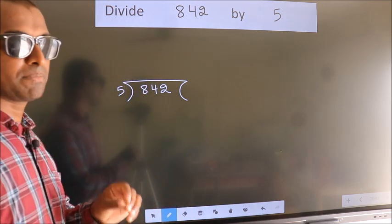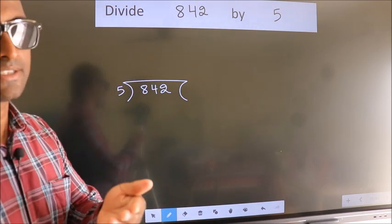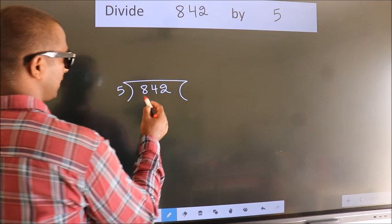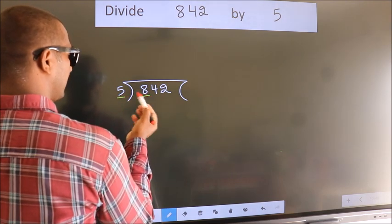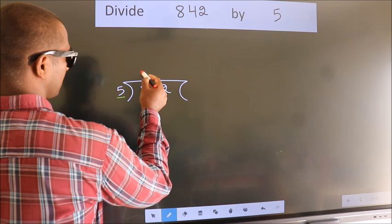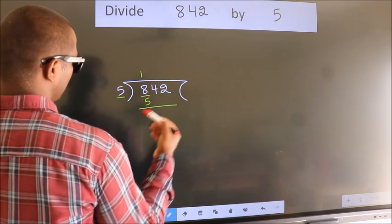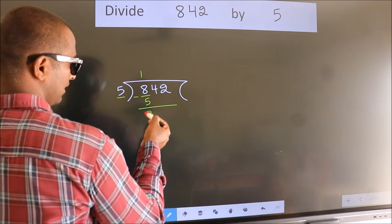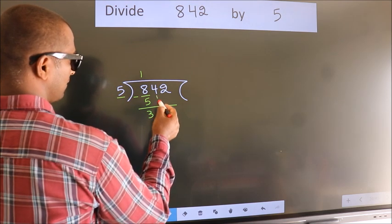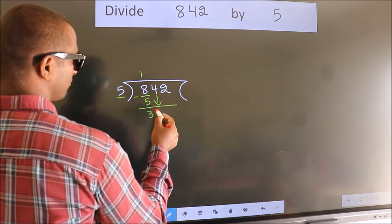This is your step 1. Next, here we have 8. A number close to 8 in the 5 table is 5. 5 once is 5. Now we should subtract, we get 3.